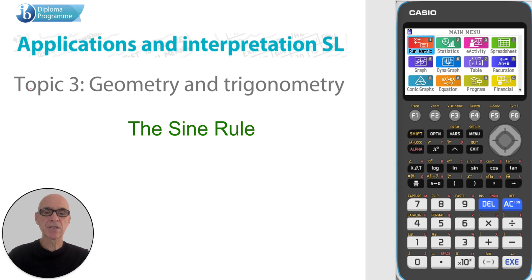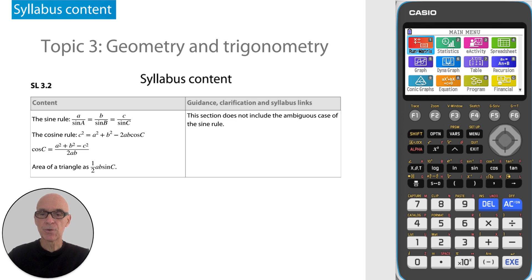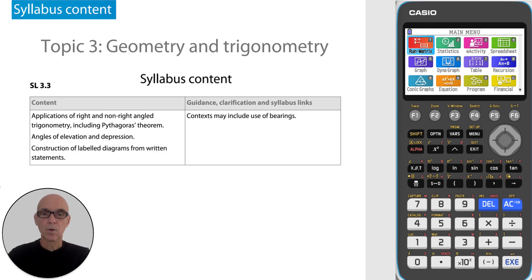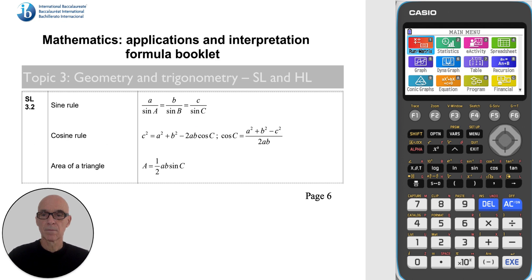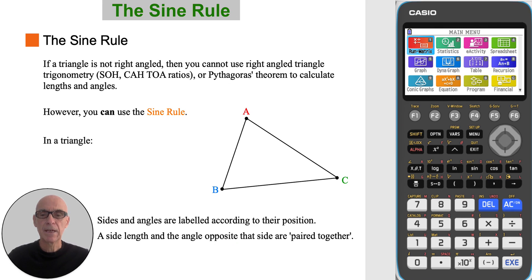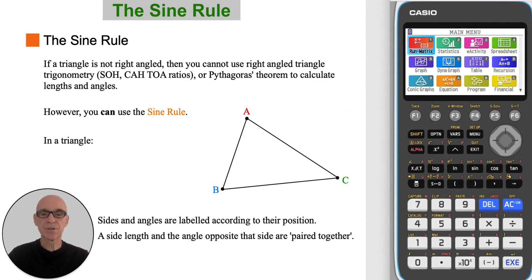Hello, this video is on the sine rule, as shown here in the syllabus. Questions involving the sine rule may involve the use of bearings. The formula for the sine rule is given on page 6 of your formula booklet. If a triangle is not right-angled, then you cannot use right-angled triangle trigonometry, or Pythagoras' theorem to calculate lengths and angles. However, you can use the sine rule.